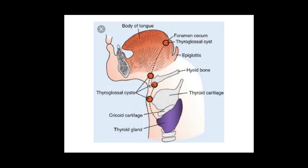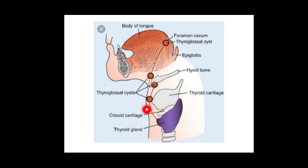This diagram shows the various sites: the foramen cecum, the floor of the mouth, the suprahyoid location, the subhyoid location, and in front of the thyroid cartilage. Other locations exist but they are rare.